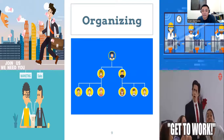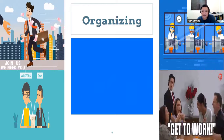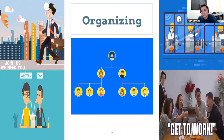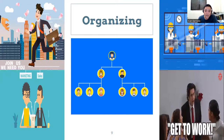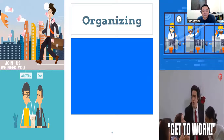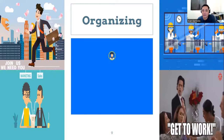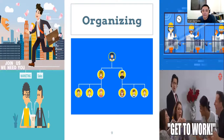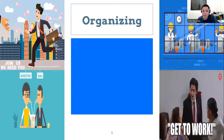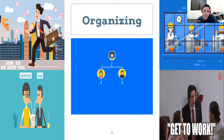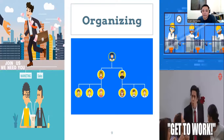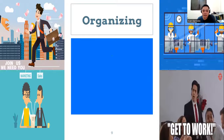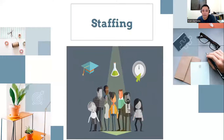Organizing also includes staffing. There's an argument that with four functions — planning, organizing, directing, and controlling — staffing is already omitted because it's considered part of organizing. But for our discussion, staffing is essentially: if you have a plan and you're organized, who will do the plan? Who will do the organization? That is staffing.